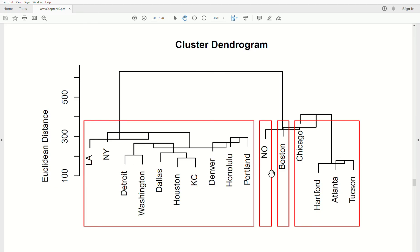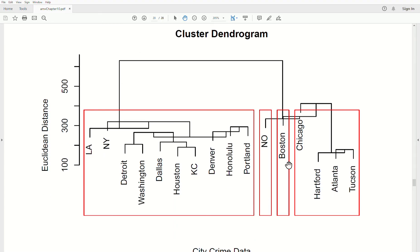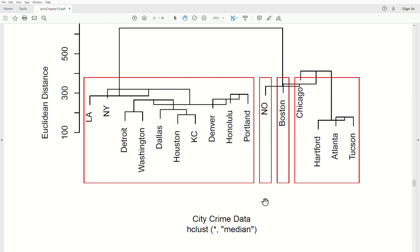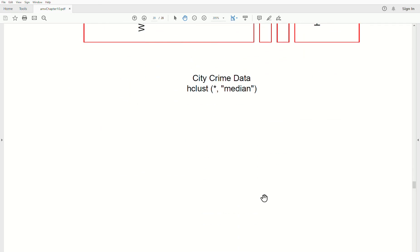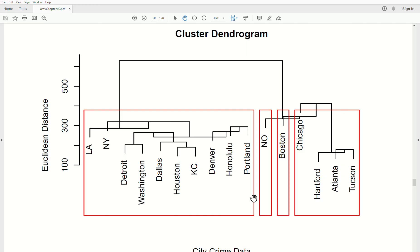And this is the four clusters that would be created using the median method. Now, of course, you can change K equals five or two or whatever. Here, it looks like two clusters would be perfect because there's a large distance between them. And these are all grouped and that's grouped. Yep. Well, that's the median method. The next method we're going to look at is called Ward's linkage.